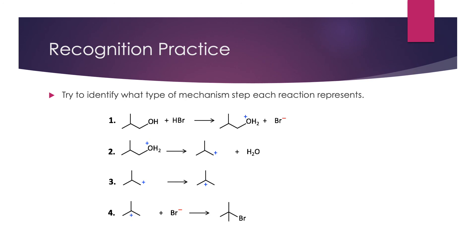Let's practice identifying reaction steps. In the first step, a secondary butyl alcohol reacts with HBr, producing an alkyl hydronium ion and bromide minus. The net effect is that a hydrogen has moved over from the bromine — not a hydrogen atom, but a hydrogen ion, a proton. Whenever we've moved a proton like this, this is a proton transfer. That's how we would label this particular step.